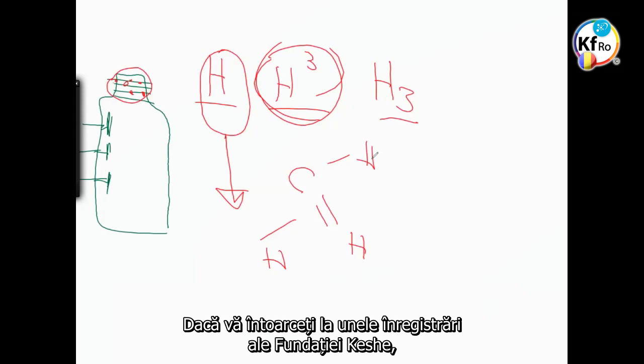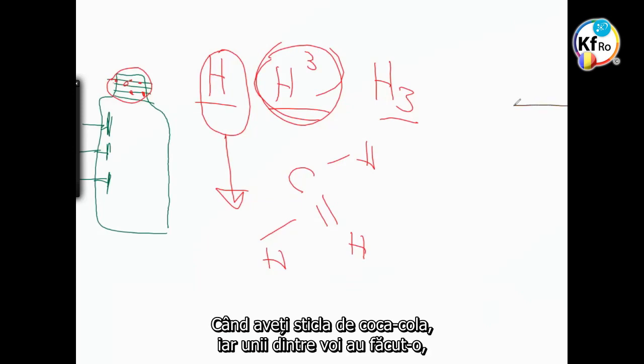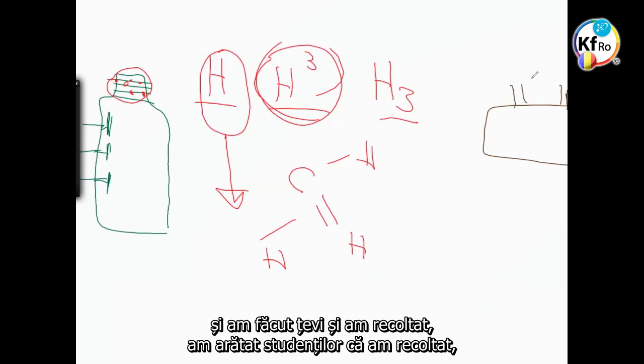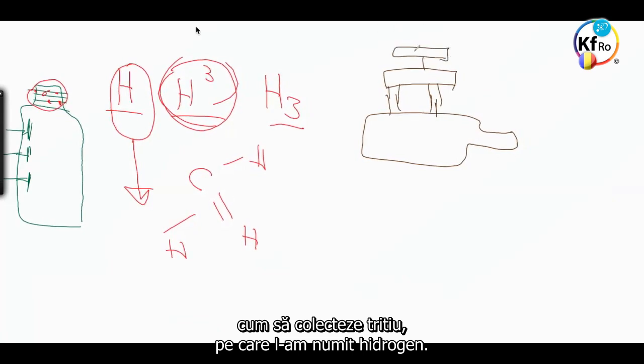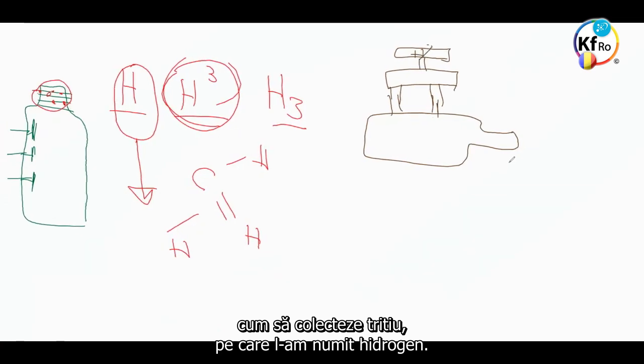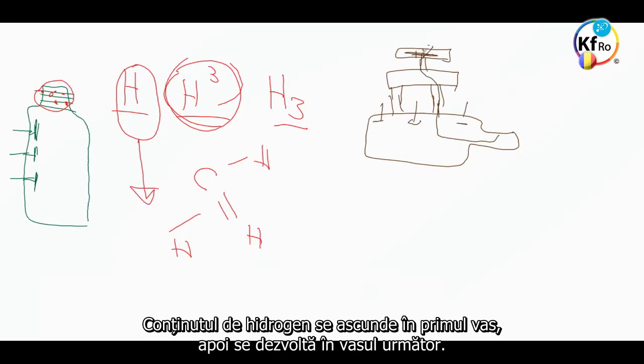If you go back to some of the recordings of the Keshe Foundation, I explained this very clearly when you had a Coca-Cola bottle. And some of you followed it. I made pipes and I gathered, I showed to the students how to collect Tritium, but I called it Hydrogen. Where the electrodes are here to attract it, to pull the produced Tritium up to where it should be. The content of the Hydrogen hides amongst the first tank and then develops to the higher tank.